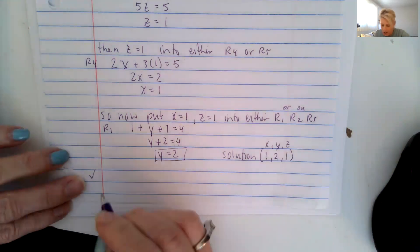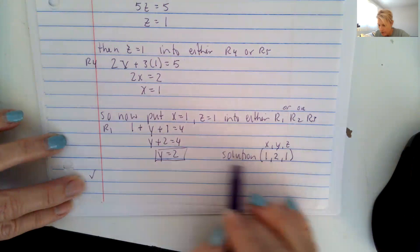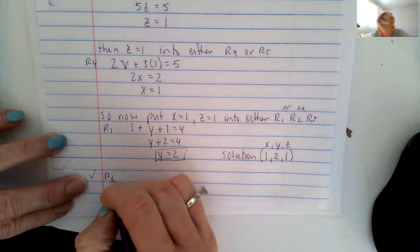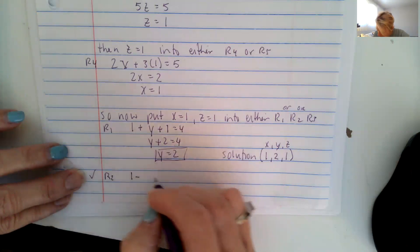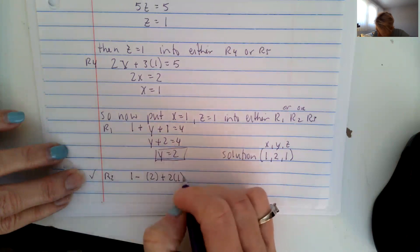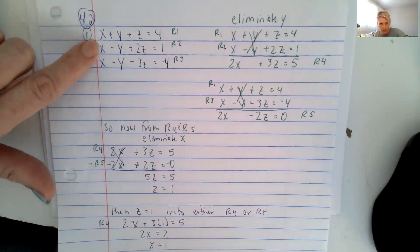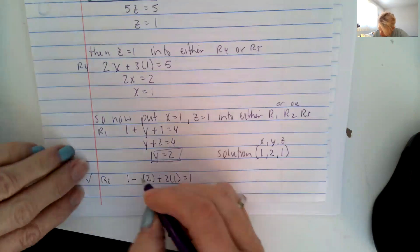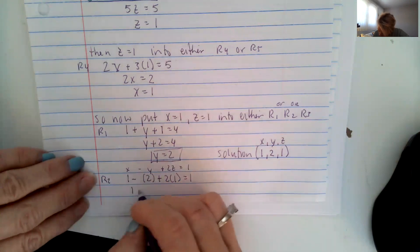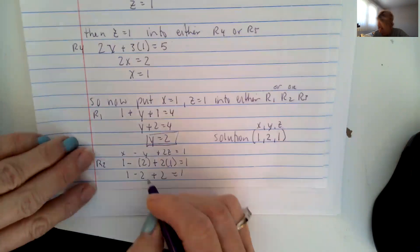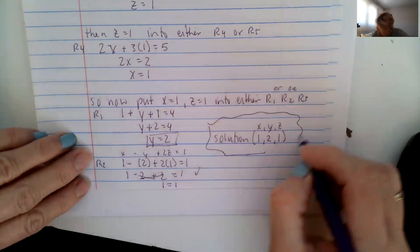You can always check — I want you to be checking to show me that it works. Because I used row one to find y, I'm going to check my answer in row two. So if x is one minus y, y is two, plus two times one for z equals one. Using the original equation for row two, x minus y plus two z: one minus two plus two equals one, the two's cancel, and one equals one. So I'm correct — my solution is correct.